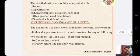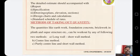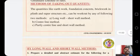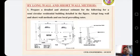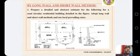Methods of Taking Out Quantity: Quantities like earthwork, foundation, brickwork, concretework, plinth and superstructure etc. can be worked out by any of the following methods: the first is the long wall–short wall method, the second is the centre-to-centre line method, and the third is the partly centre line and short wall method. By the long wall–short wall method, prepare a detailed and abstract estimate for the following drawing for a semicircular residential building. Add up the long wall and short wall method and use local prevailing rates.